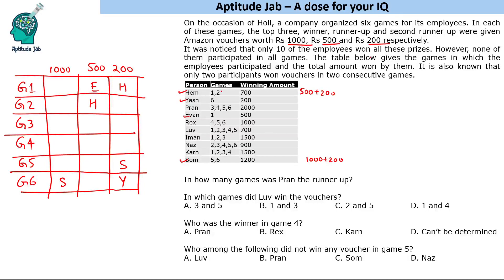Now looking at the condition that only two participants won vouchers in two consecutive games — those persons are Him and Somm. We have just determined those people. So no other people can win vouchers in two consecutive games.